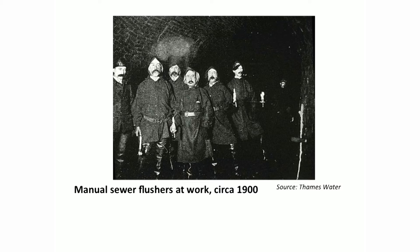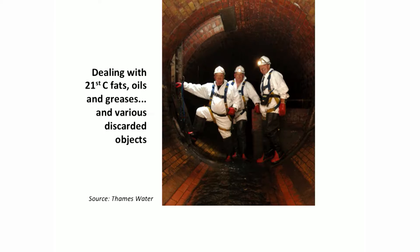Blocked sewers had to be cleaned. In the 19th century this was a very manual job. In the photo here you can see so-called sewer flushes in Fleet Sewer under Farringdon Road, London. This is a manual job that hasn't gone away, though. Here are some of Thames Water's present-day sewer flushes doing a very similar job to their 19th century counterparts — checking the sewers and removing blockages.